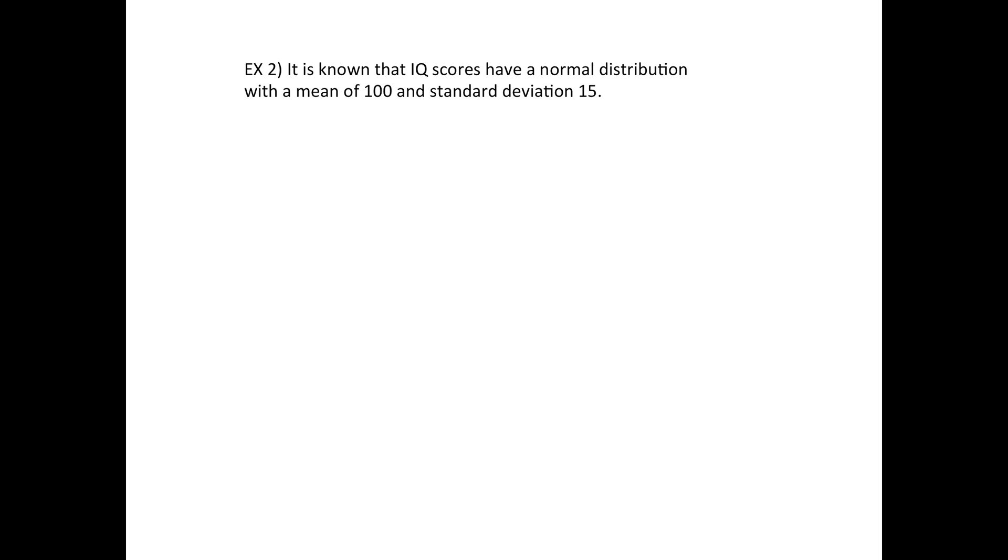So back to this example with the IQ scores, and this is actually an example from the previous section. What's the chances that you find one person that's a genius? And by the way, this is supposedly the cutoff for being a genius if you've got an IQ over 132. So you do the bell-shaped curve with mean of 100 in the middle. Here's 132, do the z-score, we get a 2.13.